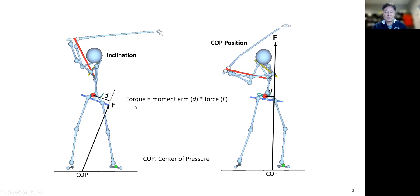Torque, by definition, is equal to the moment arm times force magnitude. Near the top of the backswing, the combined ground reaction force is acting at the combined center of pressure, and this force has an inclination. As a result, this forms a long moment arm.